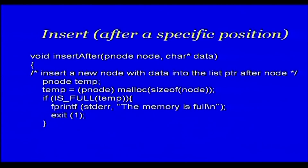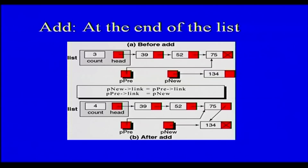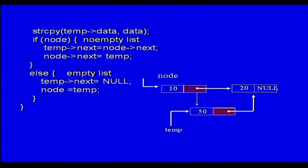Another way is to insert after a particular node whose address is given — you assume you know the address of a node and you just insert after it. This is the same operation we already discussed: set the new node's link to point to the node after the given node, then set the given node's link to point to the new node. Up to now we have seen: creation of an empty list, addition into an empty list, addition at the front, addition in the middle, addition at the end, and addition after a particular node whose address is given.